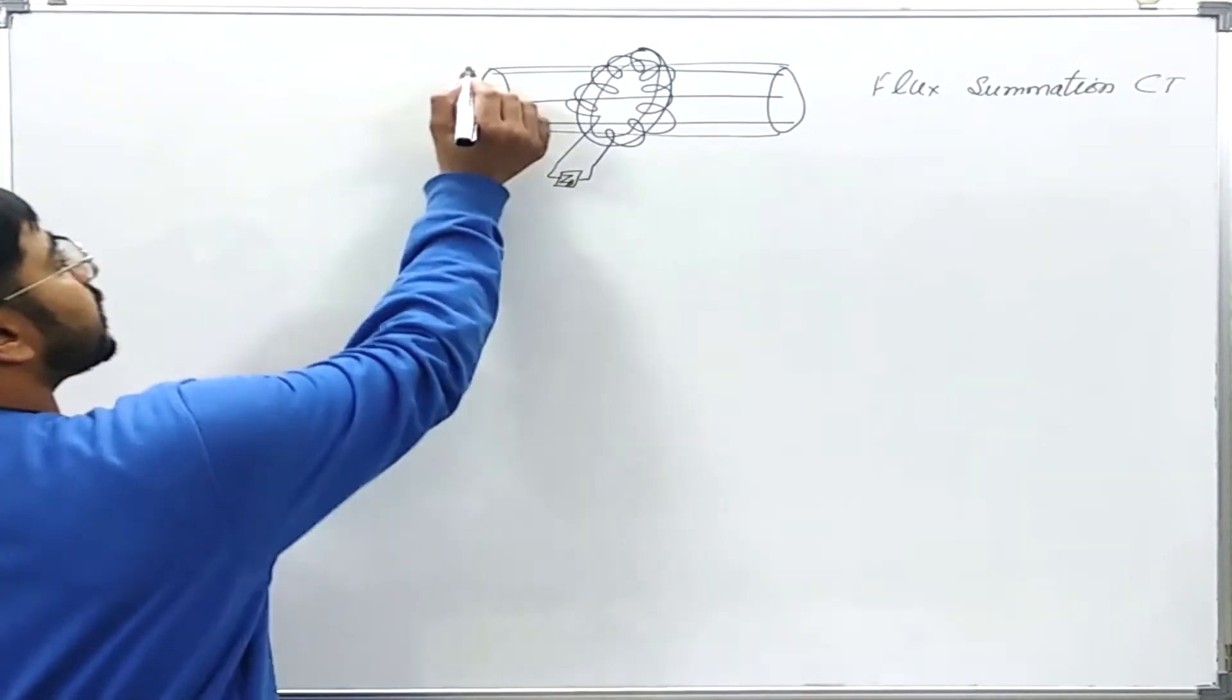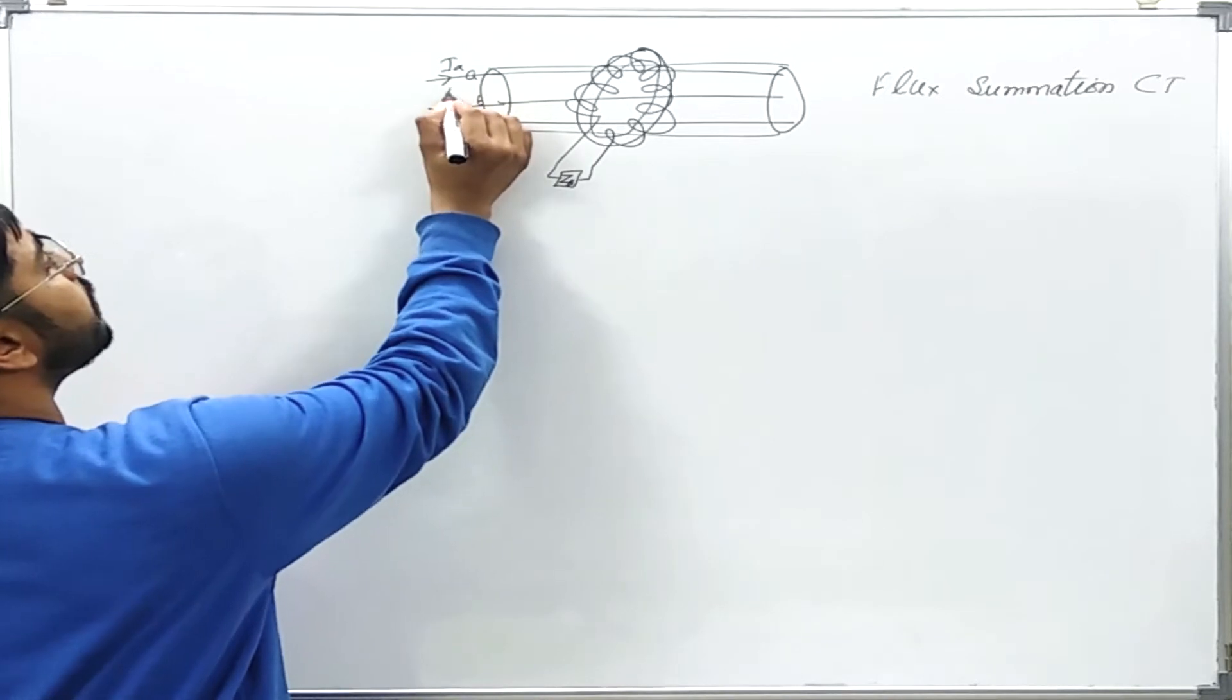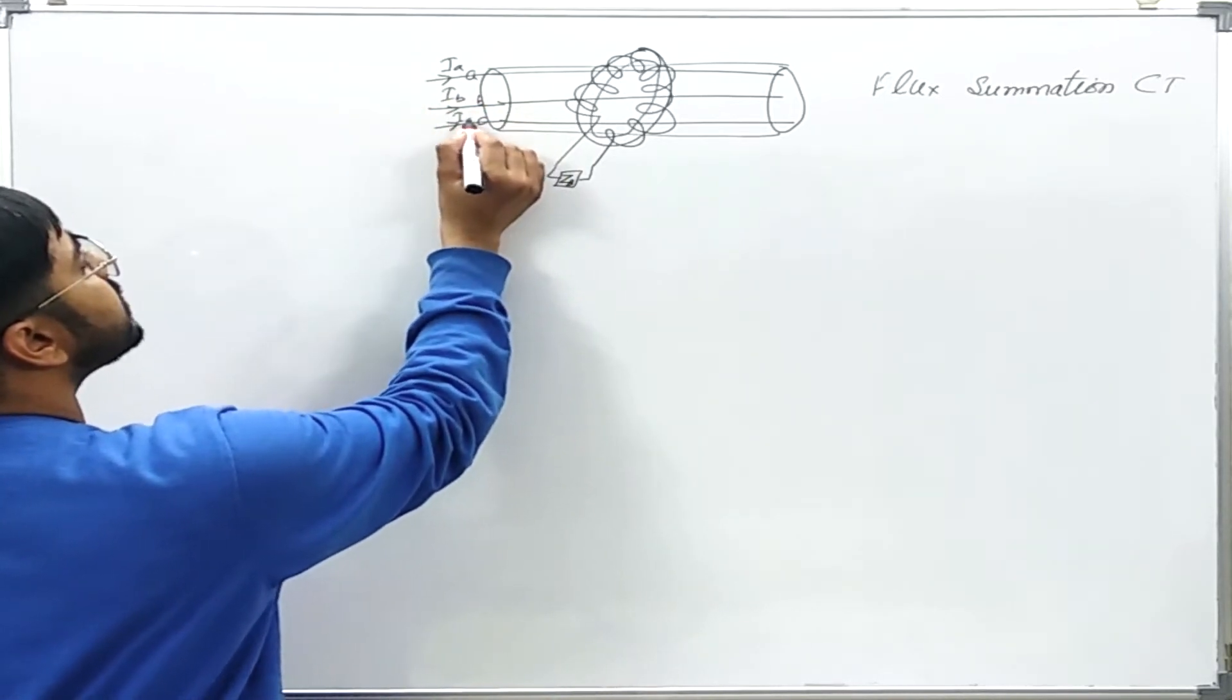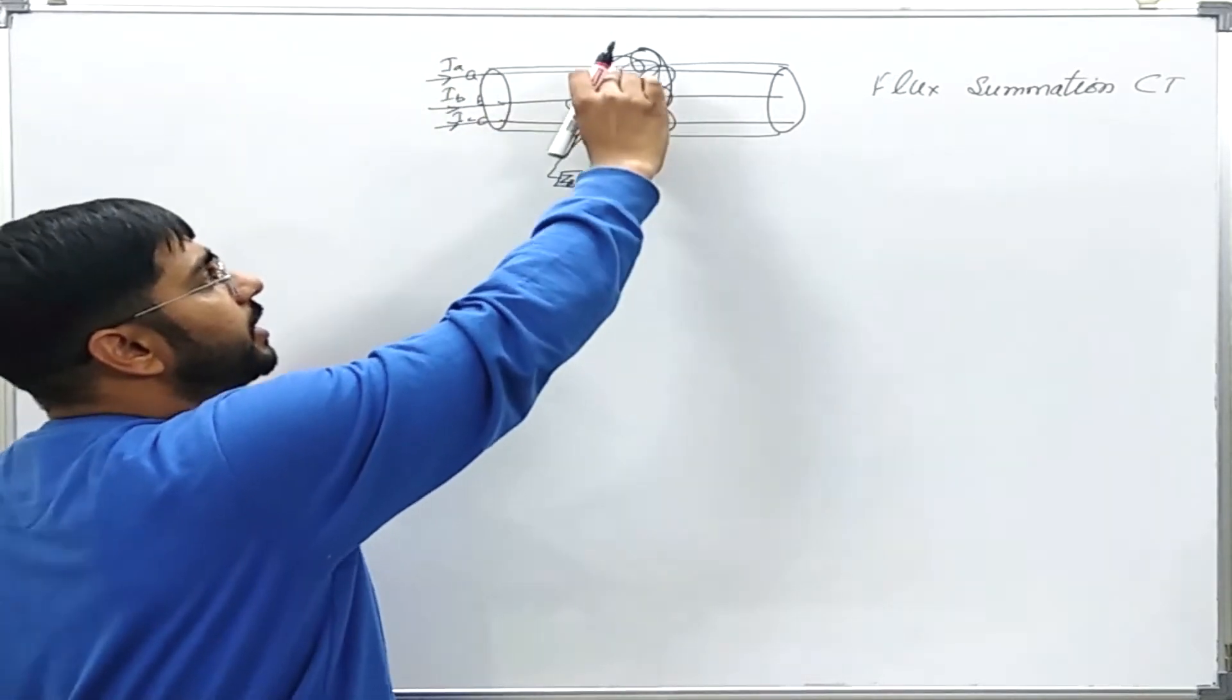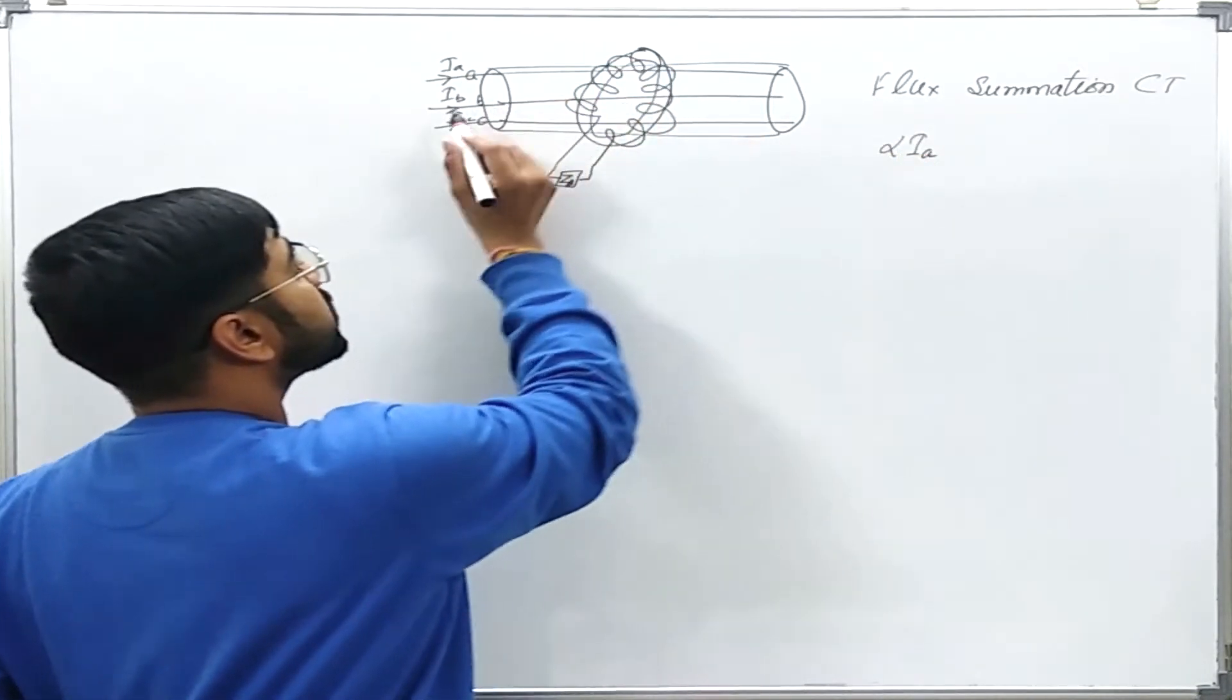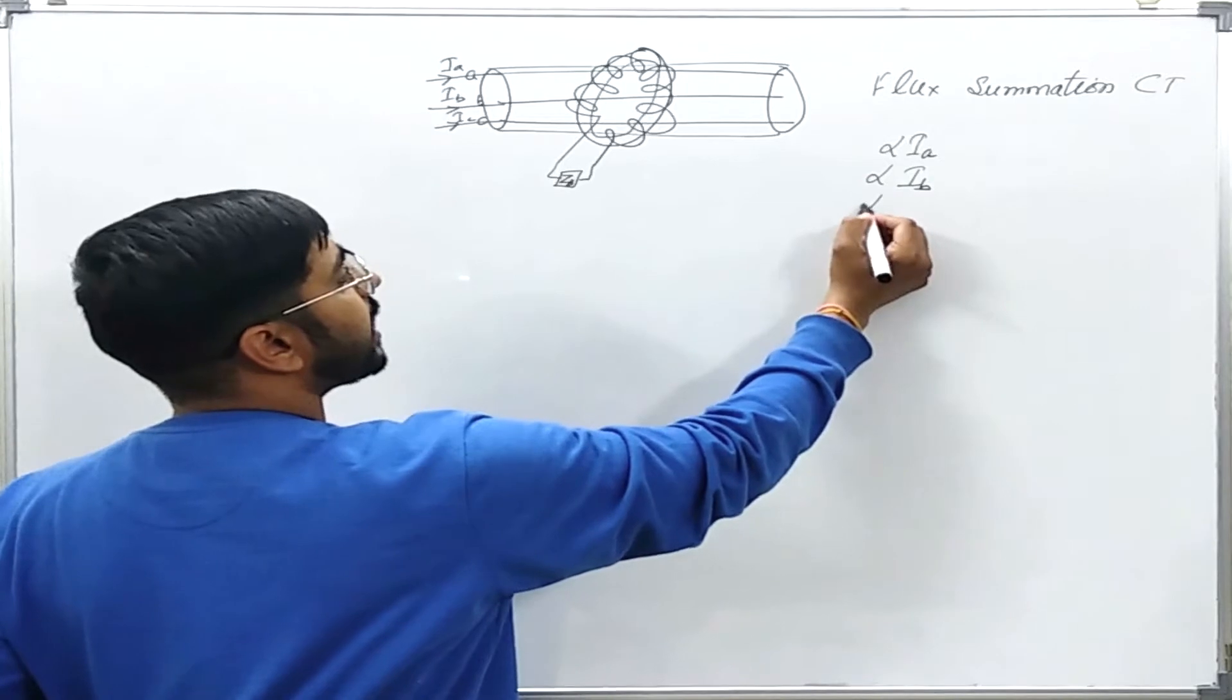You see that this current in phase A will be IA, current in phase B will be IB, and current in phase C will be IC. The flux produced by the current A in the CT will be proportional to IA. Similarly, the flux produced by IB in the CT core will be proportional to IB. Similarly, for IC.